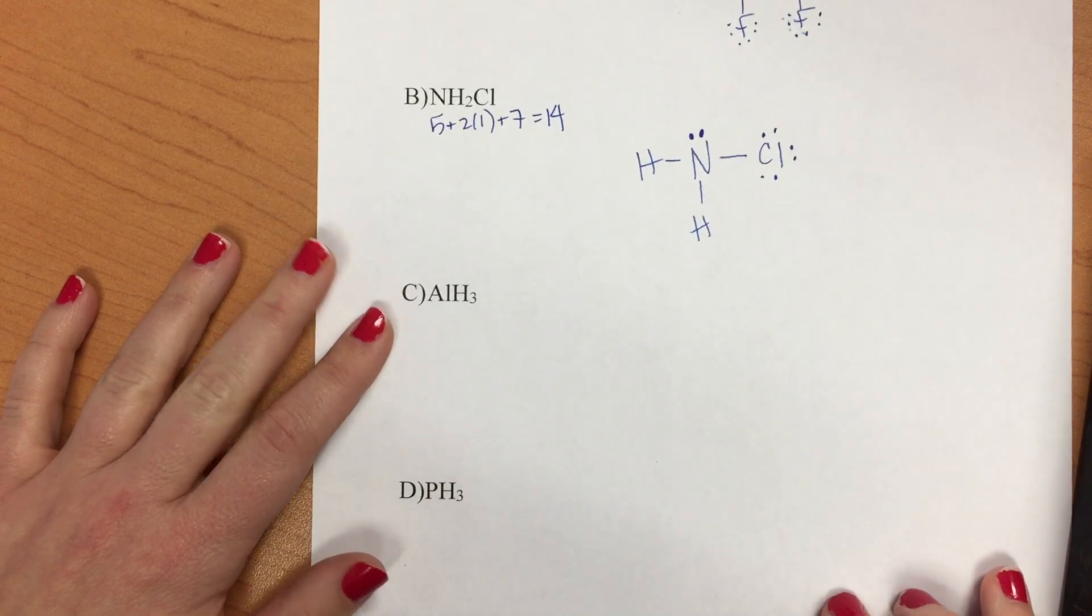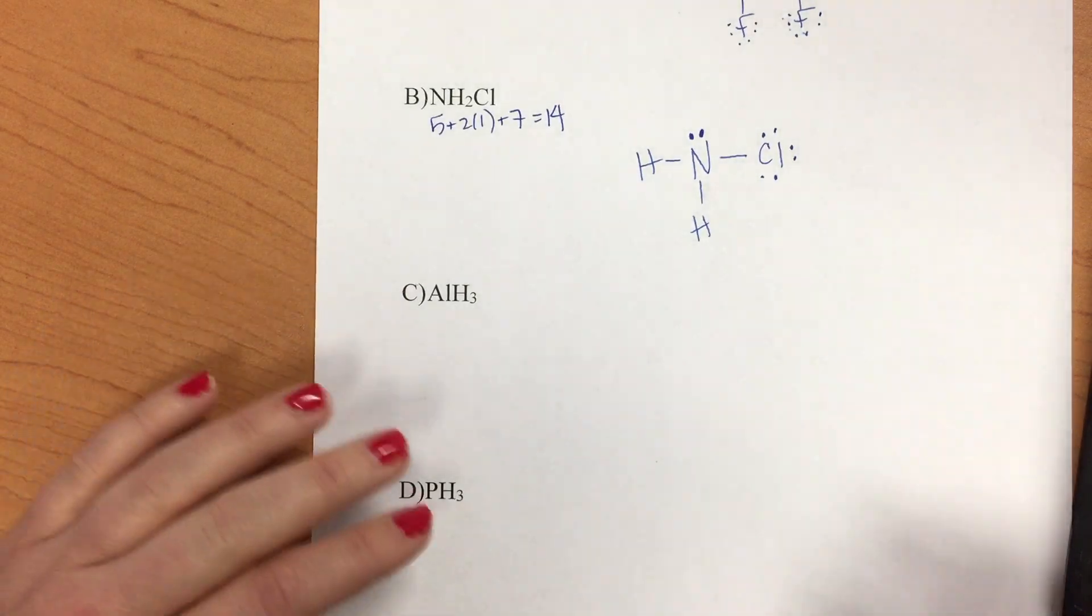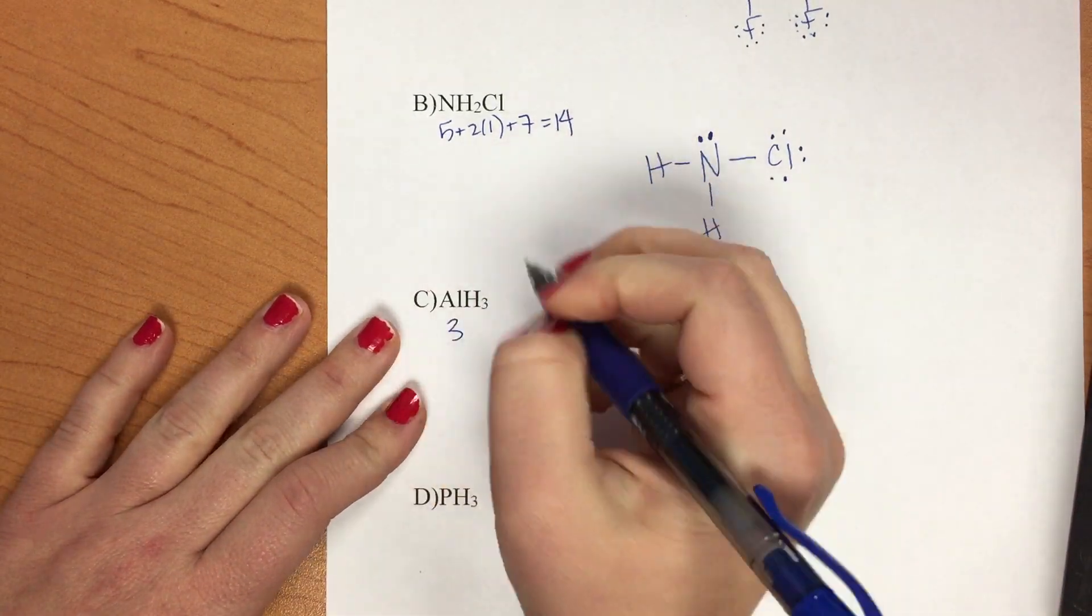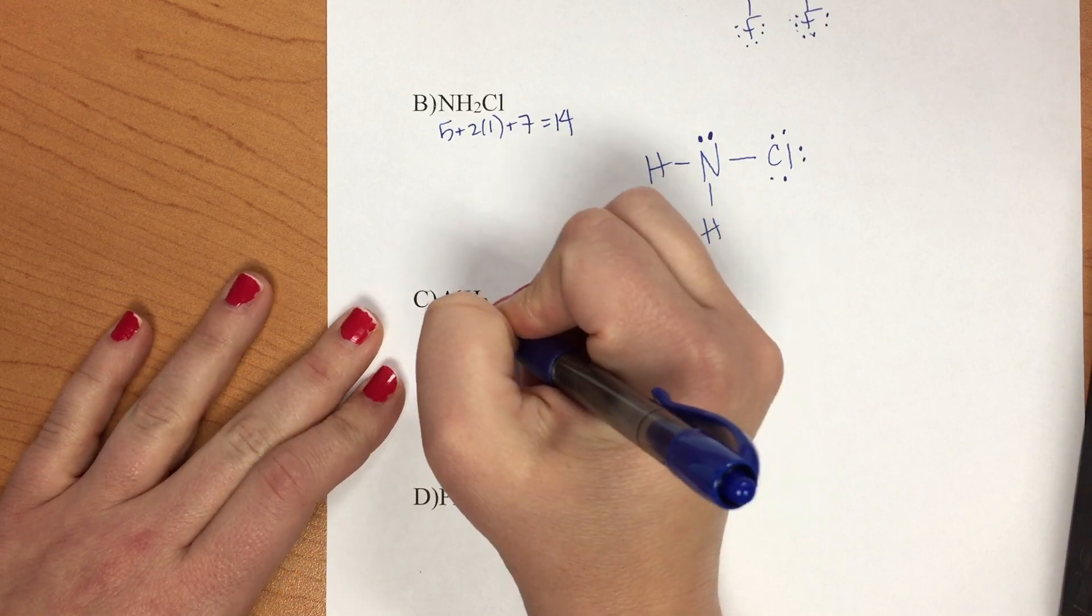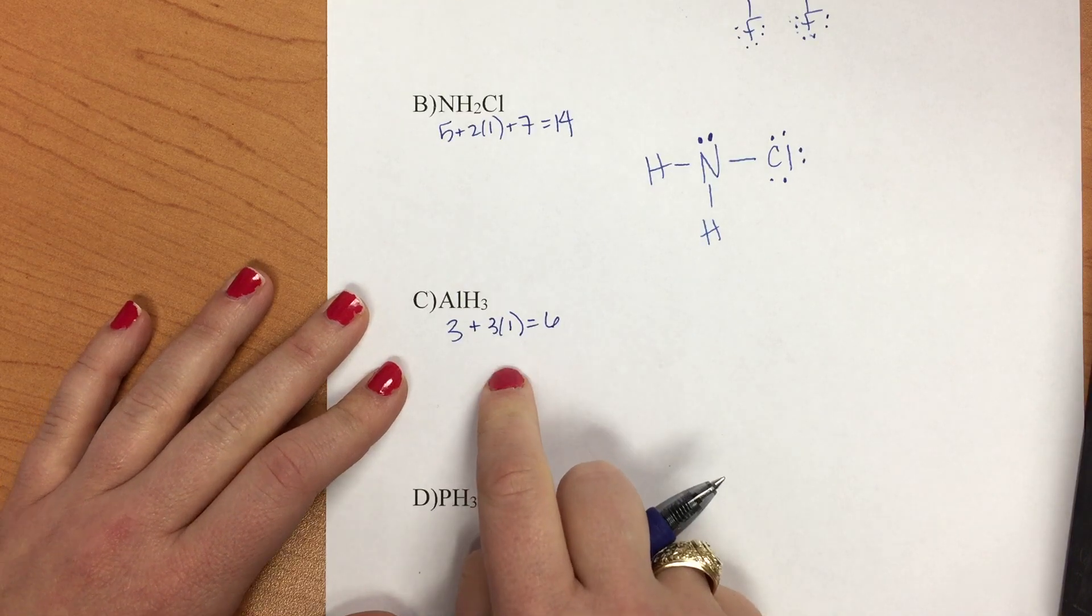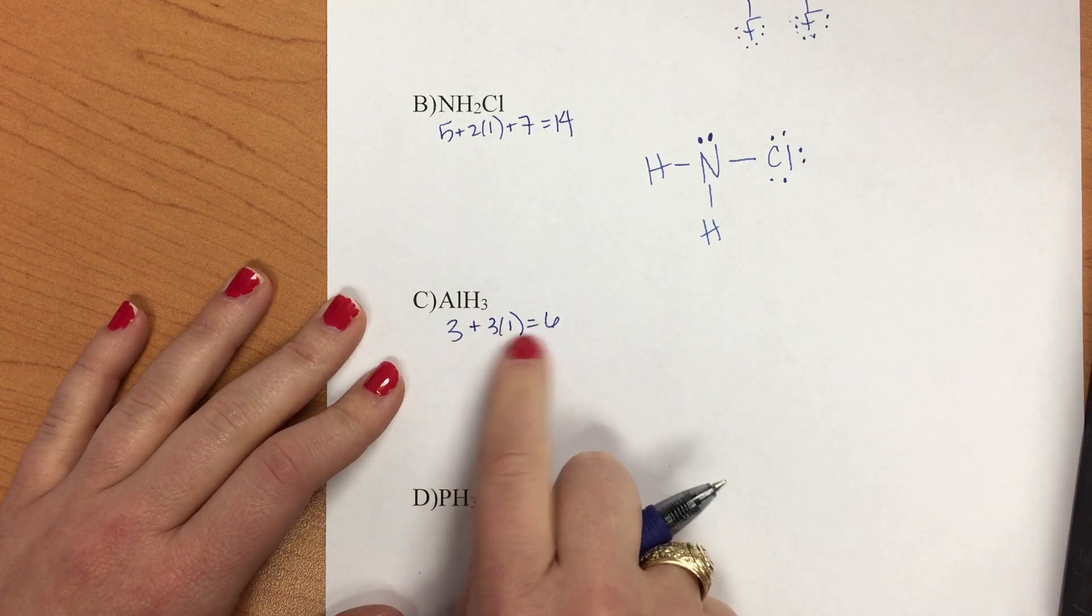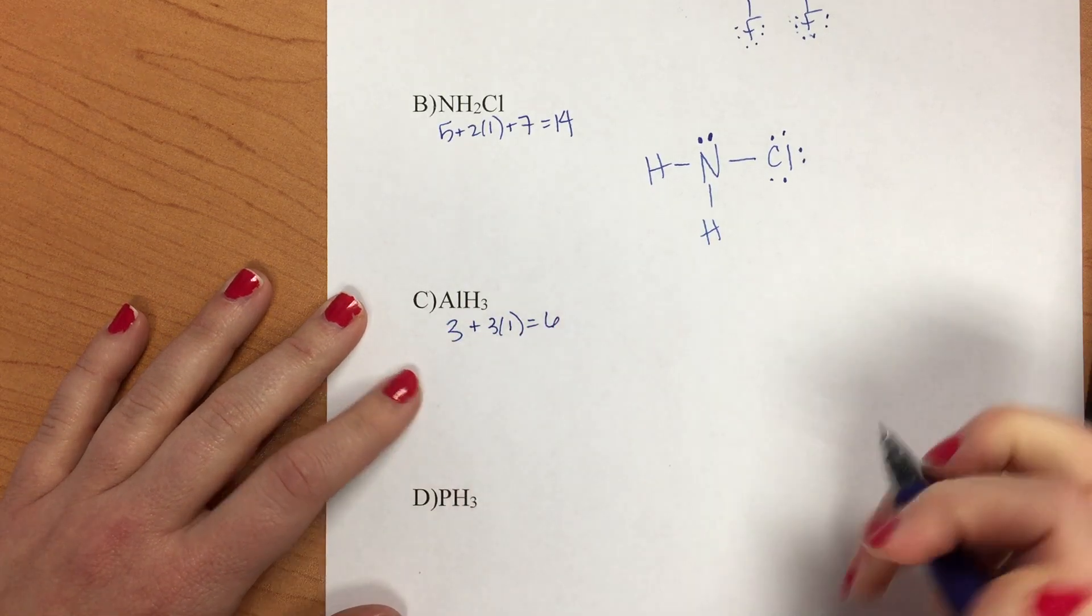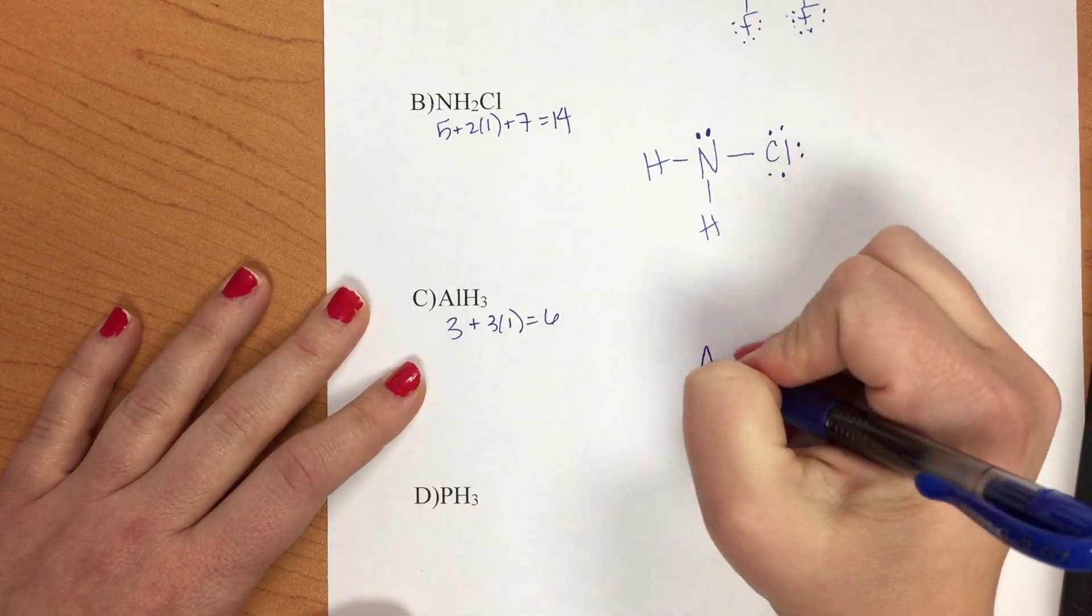Okay, so next we have aluminum trihydride. So we have three valence electrons for the aluminum plus 3 times 1, which equals 6. So we know that this is going to not make octet because there are not enough electrons just starting out. But the aluminum is going to be our central atom.